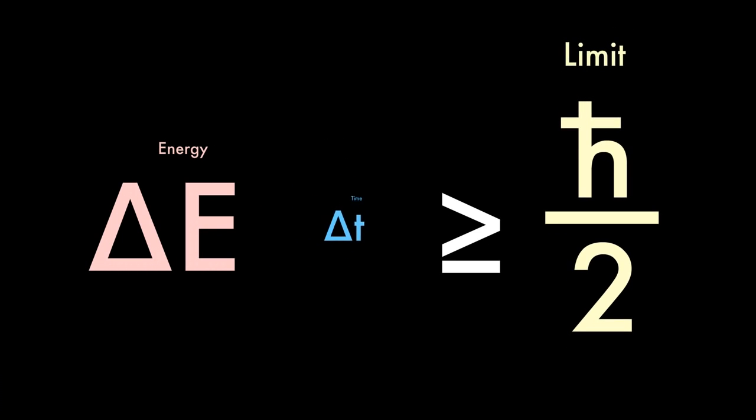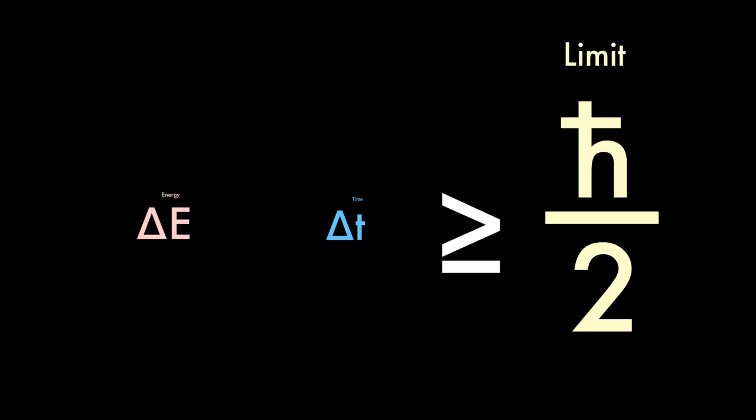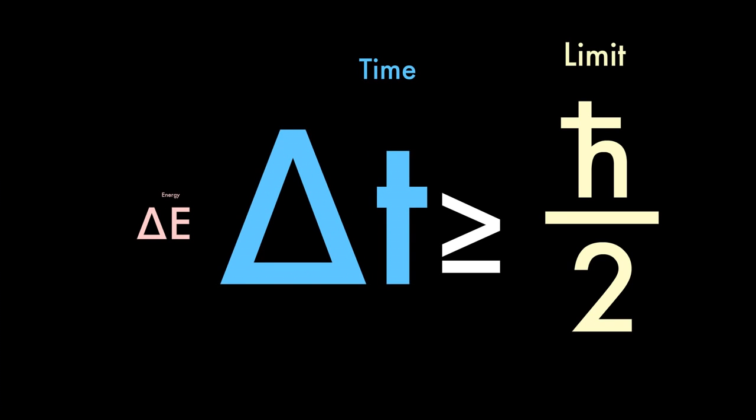If the time is significantly less than h-bar over 2, the value of the lower limit of our possible knowledge of both variables, then the energy must be very great in order to bring the value high enough to obey the equation. Conversely, if the energy is significantly less than h-bar over 2, then the time the virtual particle exists must be very great. Another important thing about virtual particles is that they can take any energy and even have attractive and repulsive forces associated with them.